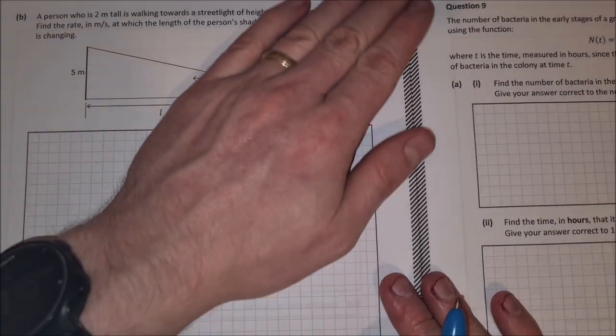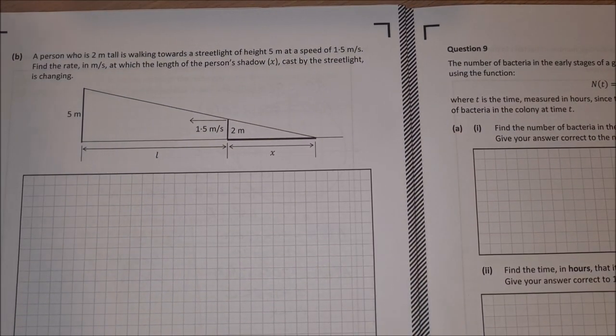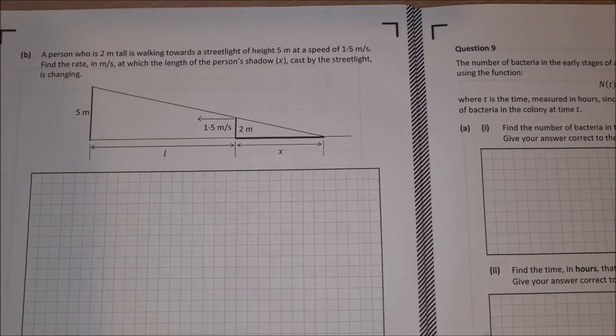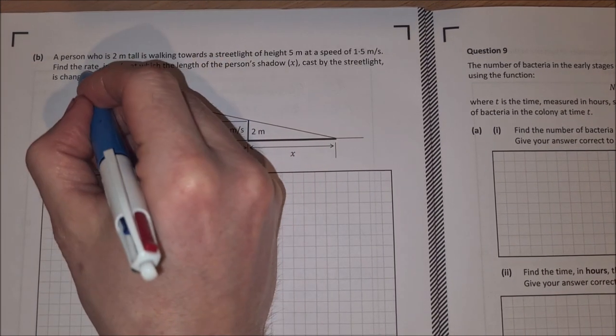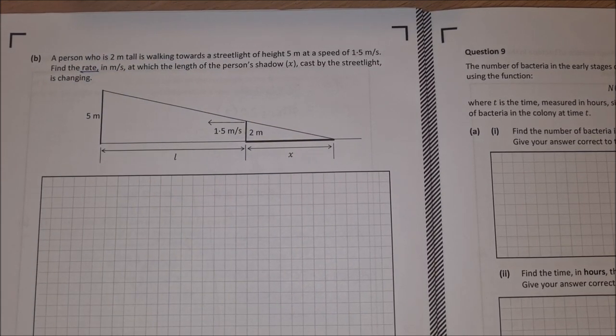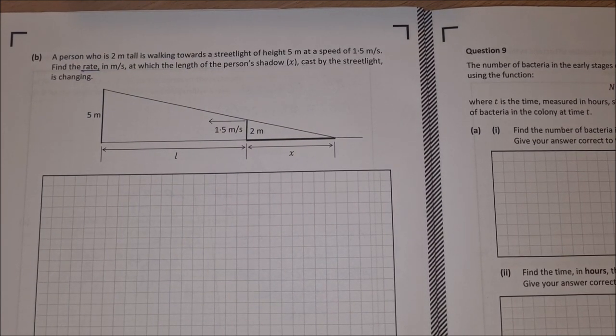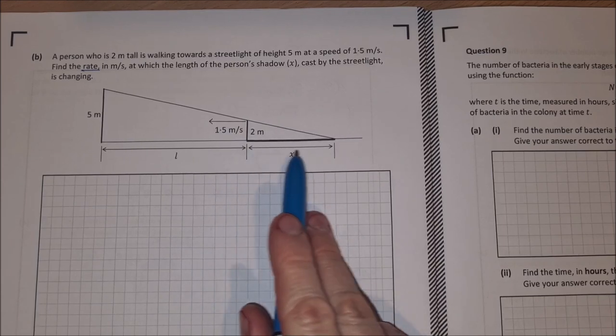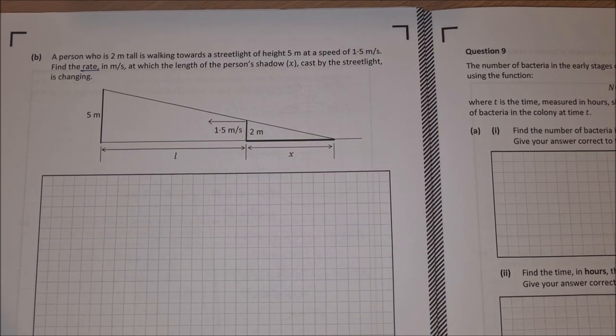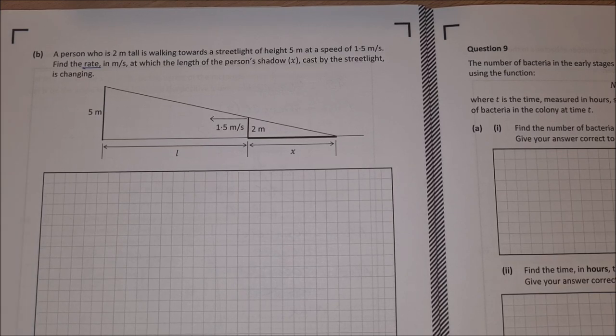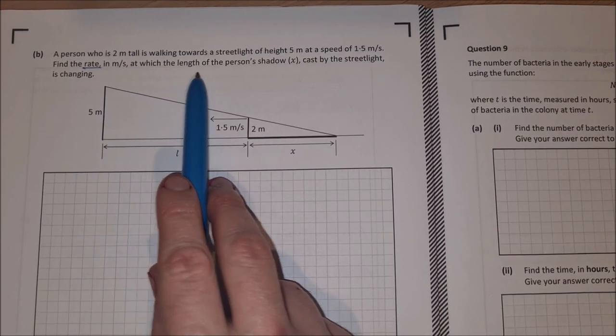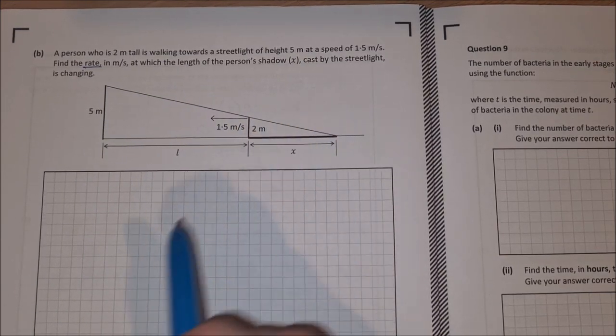And then on to part B. A person who is 2 meters tall is walking towards a streetlight of height 5 meters at a speed of 1.5 meters per second. Find the rate in meters per second at which the length of the person's shadow, which is x, cast by the streetlight is changing. So this is a rates of change question. So we want the rate at which the length of the person's shadow is changing.